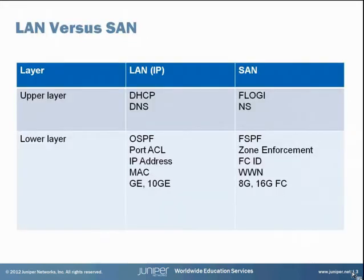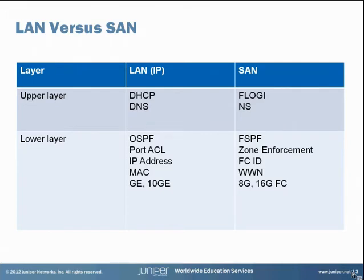It may be helpful to compare local area networks or LANs and SANs side by side. In the lower layer, in the LAN world, we have Gigabit Ethernet and 10 Gigabit Ethernet speeds. In a SAN environment, we have speeds of up to 16 Gigabit per second Fibre Channel. LAN packets have Media Access Control or MAC and Internet Protocol or IP addresses. The SAN has similarly a Worldwide Name or WWN and Fibre Channel ID or FCID. In the LAN world, we have port access control lists or port-based ACLs. SANs also have the same type of thing with zone enforcement.